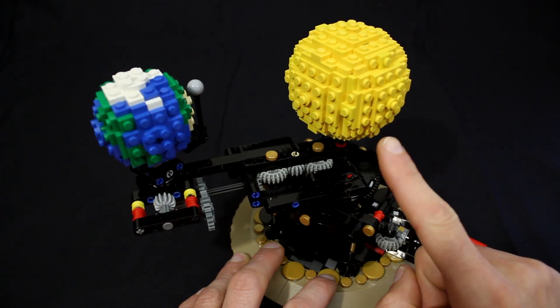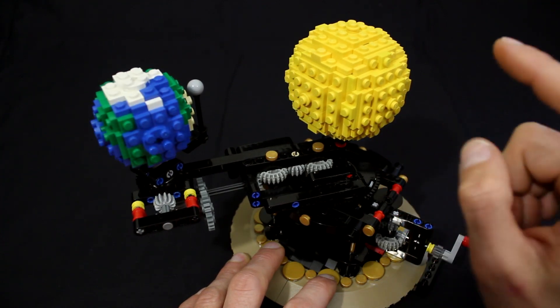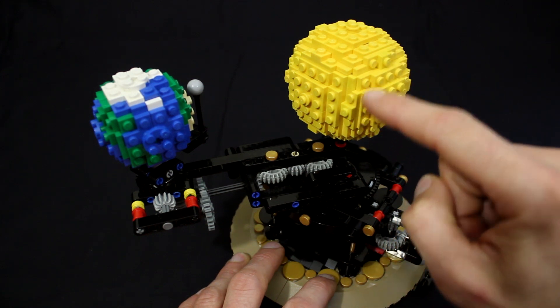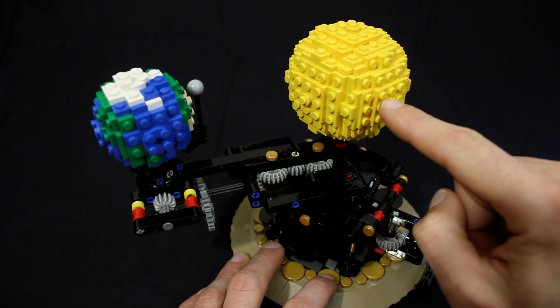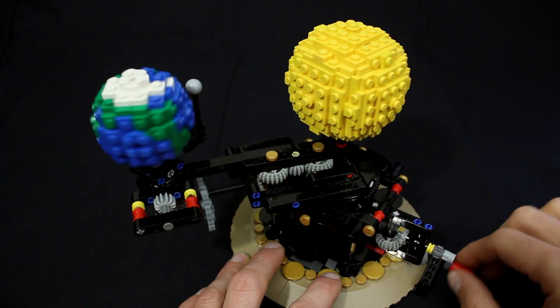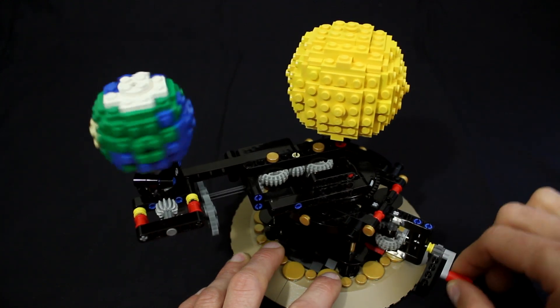In the real world, the sun is actually not a solid object, so its observable rate of rotation varies depending on what latitude you're looking at. But at the equator, it rotates once every 24.47 days, and in this model, I have it set to rotate once every 25 days.